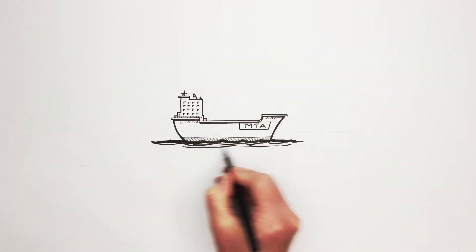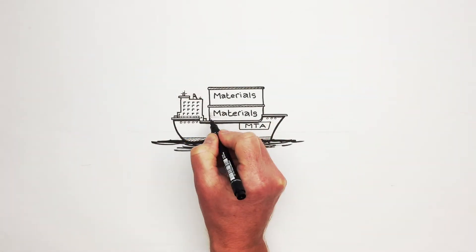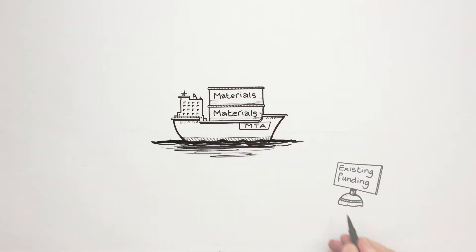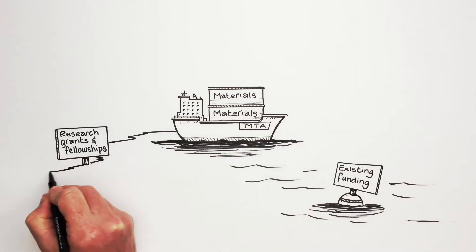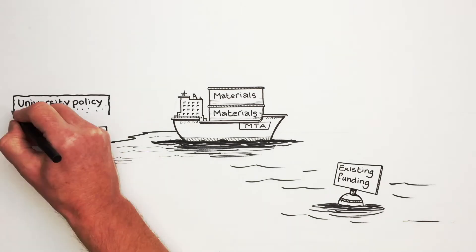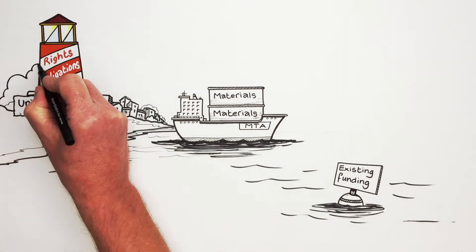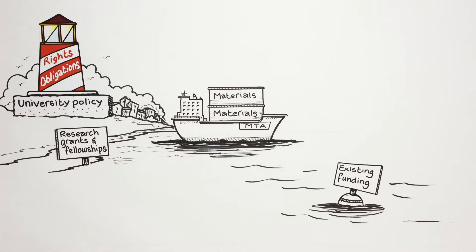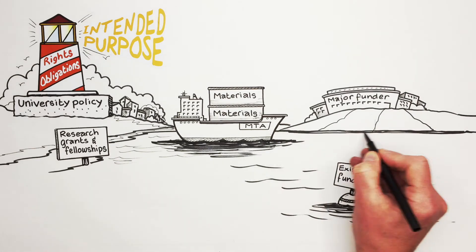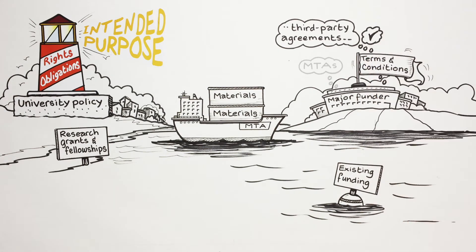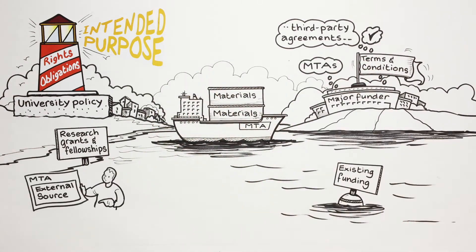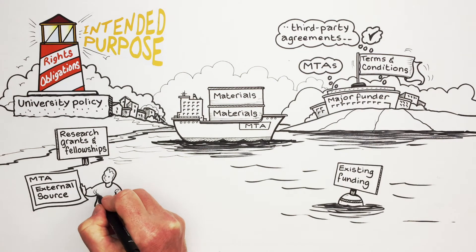MTAs ensure that the transfer of materials does not conflict with terms included in the existing funding, i.e. research grants and fellowships, and adheres to university policy, ensuring the rights and obligations fit with the researcher's intended purpose. For example, most major funders have their own set of terms and conditions where they require knowledge and acceptance of any third-party agreements, including MTAs. If an MTA has been received from an external source, this should always be reviewed by the contracts team.